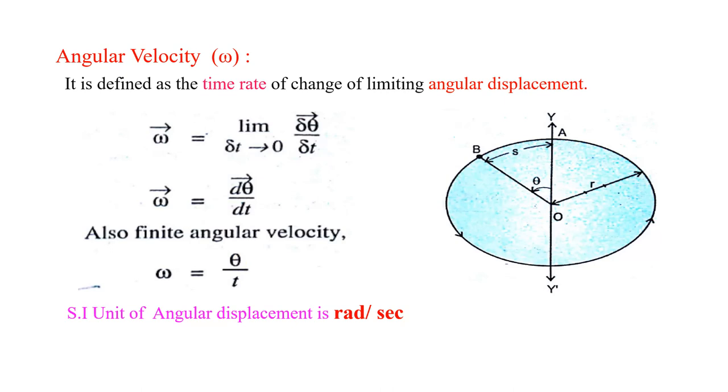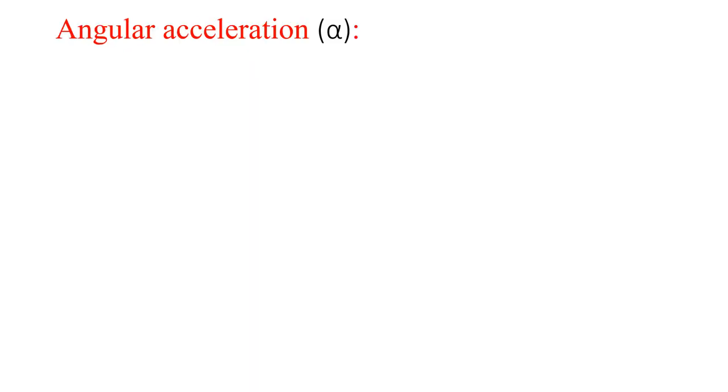Theta, we know what theta is. Theta is arc length upon radius. Arc length we find in meters and the radius is also in meters, so meter cancels meter. So theta is in terms of radians. So angular velocity is radian per second.